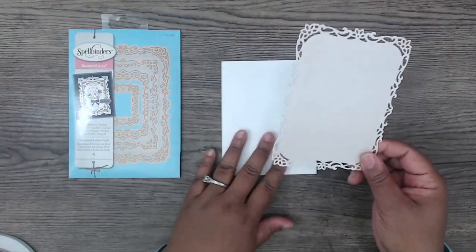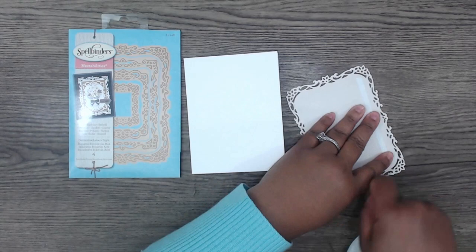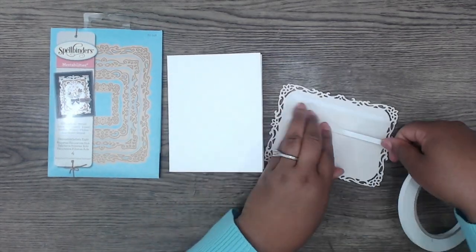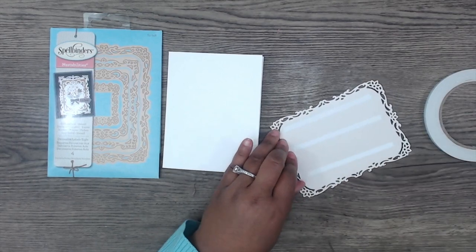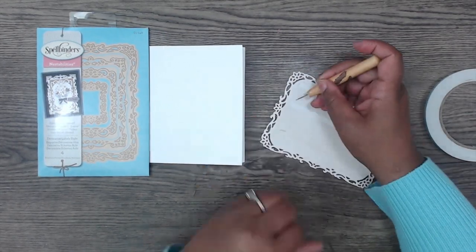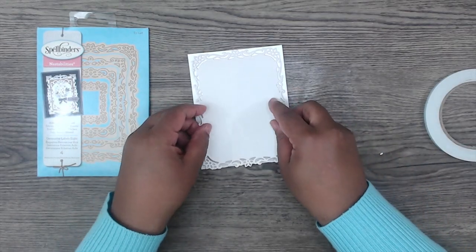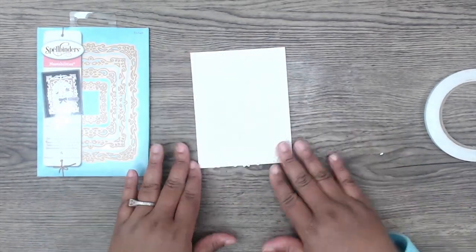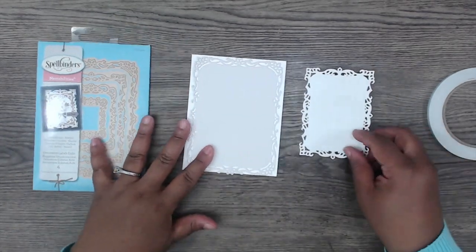There are four different dies in the Decorative Labels 8. I use die number 3 and die number 2. I cut them out in some really nice ivory color elegant cardstock. It has a bit of a shimmer to it. I just added quarter-inch scrappy tape to the back and laid that on top of my card base.